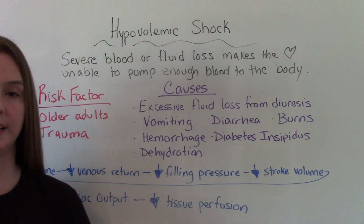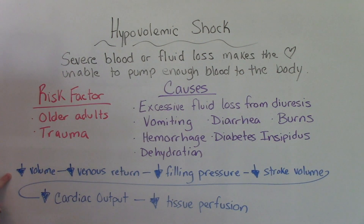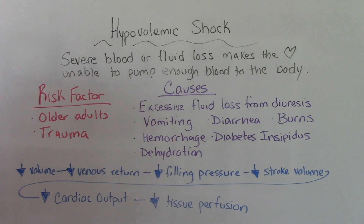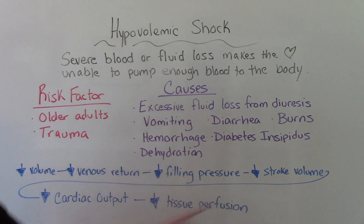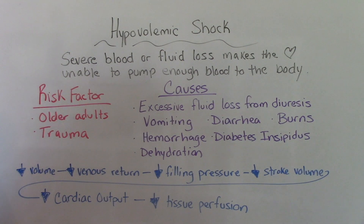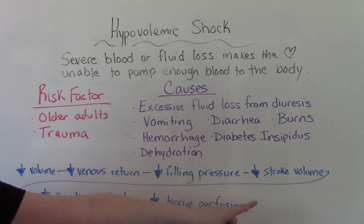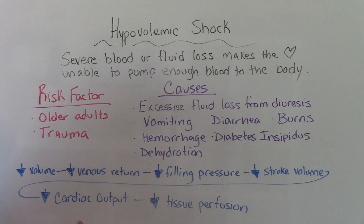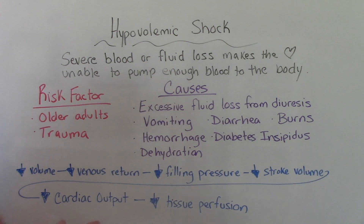The way this works in the body: that decrease in volume leads to a decrease in venous return, which causes a decrease in filling pressure of the heart, which causes a decrease in stroke volume. Stroke volume affects cardiac output, so low stroke volume leads to low cardiac output, and then low cardiac output leads to low tissue perfusion.